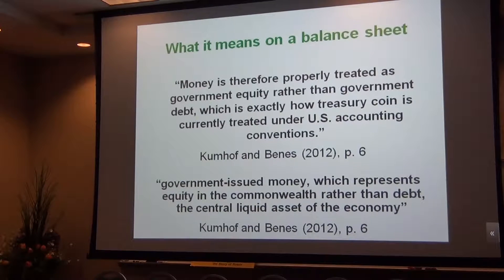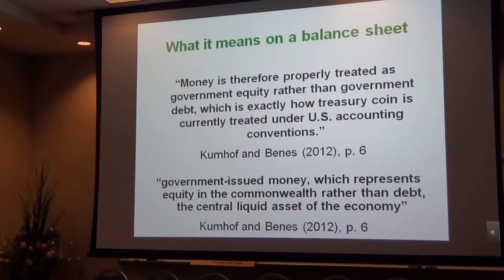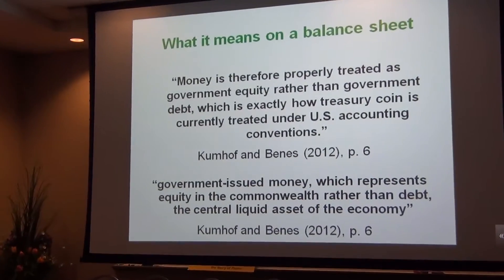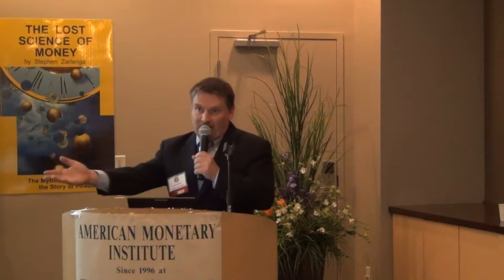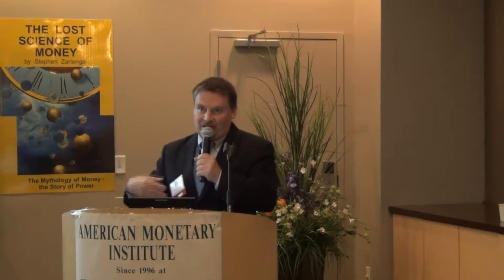And I love this phrase: government-issued money, which represents equity in the Commonwealth rather than debt, is the central liquid asset of the economy. Equity in the Commonwealth — money is basically like a share. It's like everybody has a share in the production of the country, or a right. As Joseph Huber in his upcoming book says, it's a drawing right on the ability of the society and economy to produce goods and services, as when and where required.